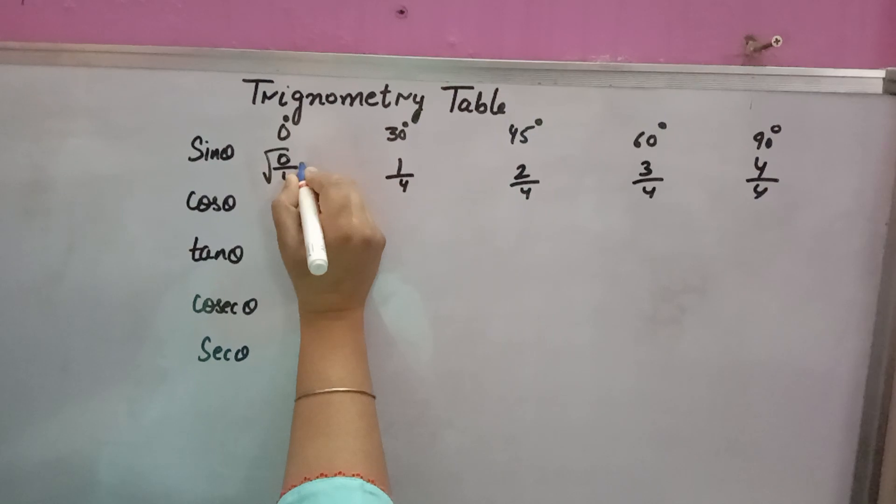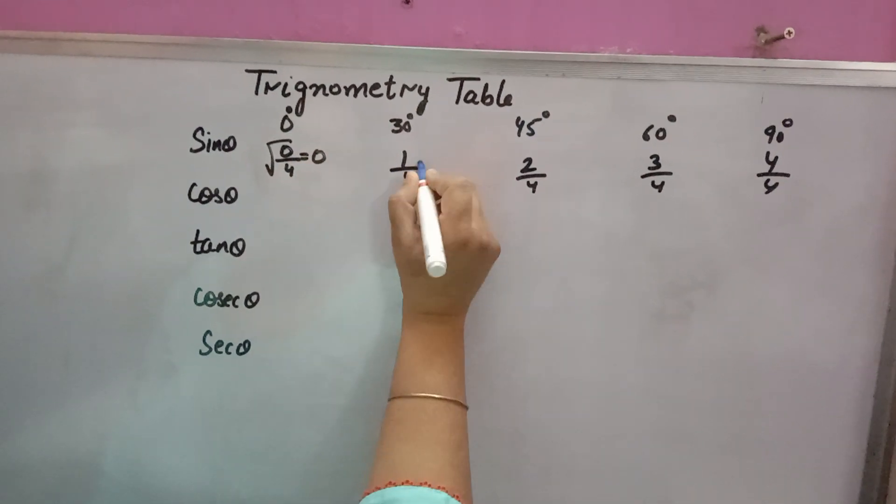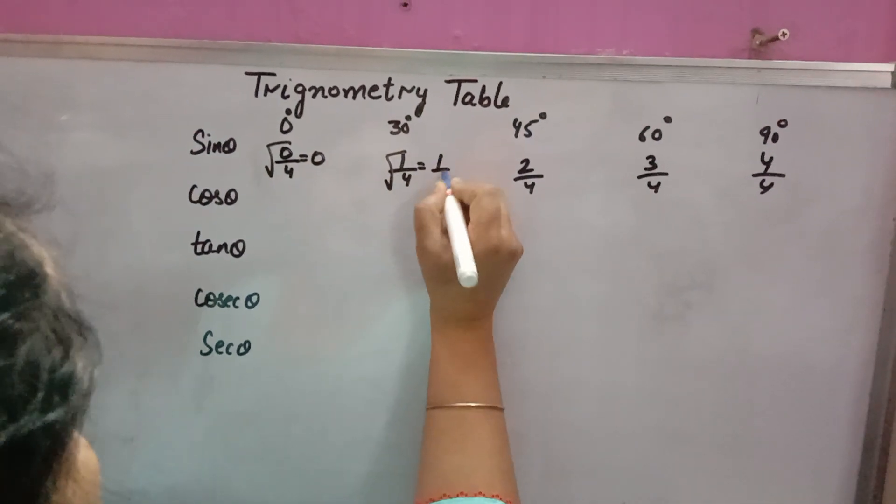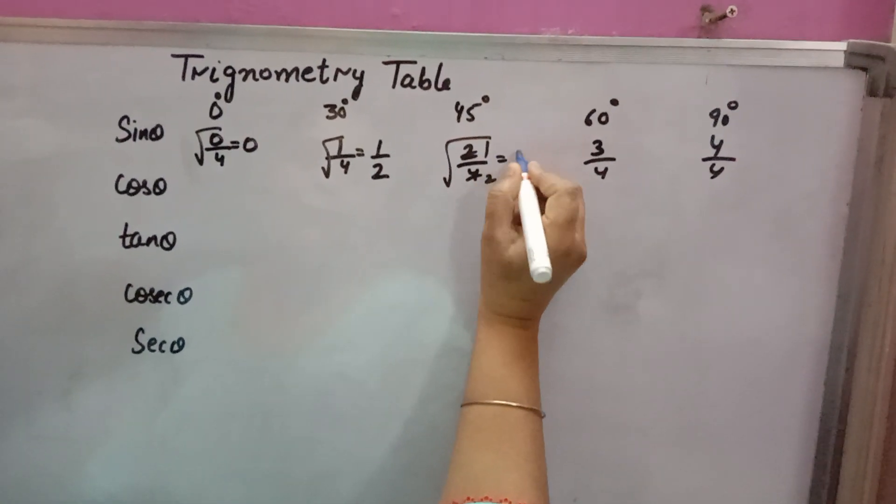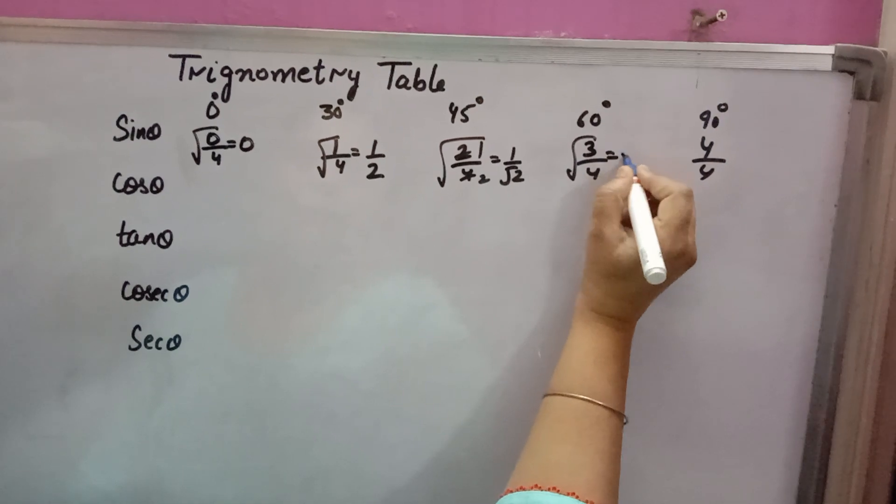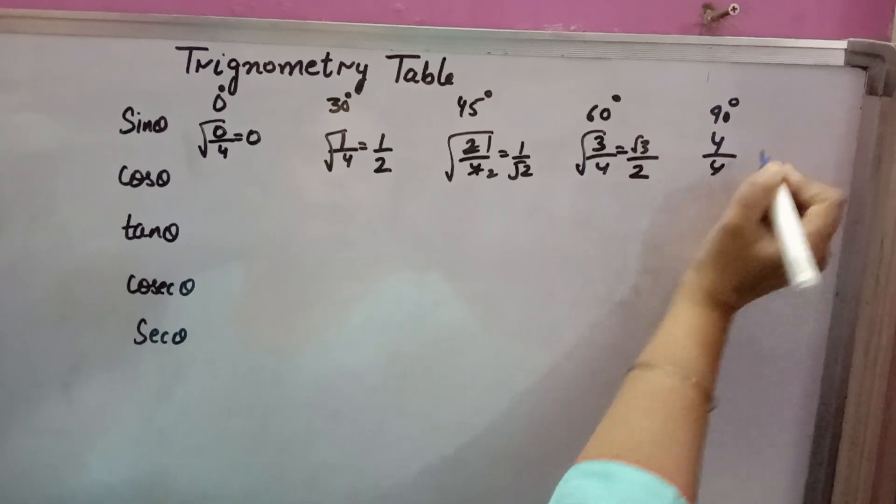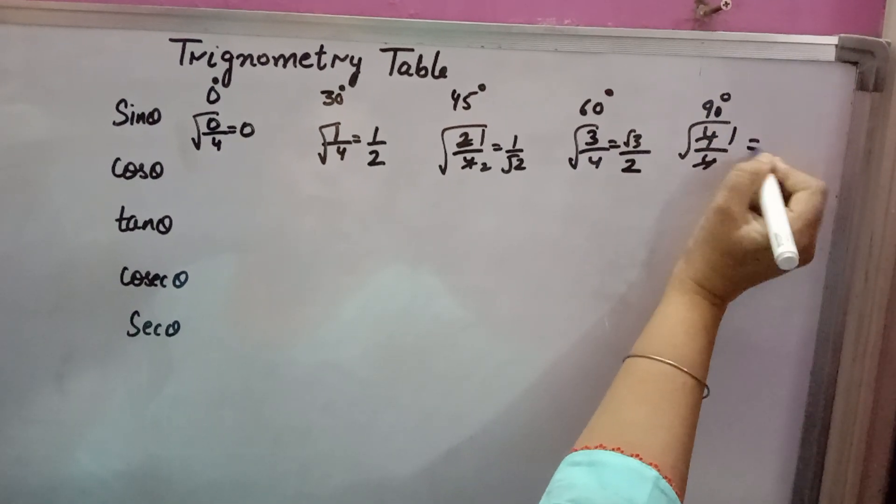Then take square root: 0 over 4, square root is 0. 1 by 4, square root is 1 by 2. 1 by 2, square root is 1 by root 2. Root 3 by 4 gives root 3 by 2. 1, square root is 1.